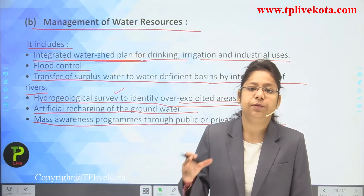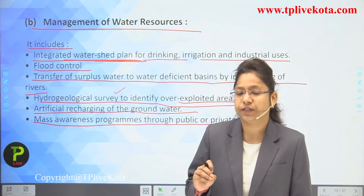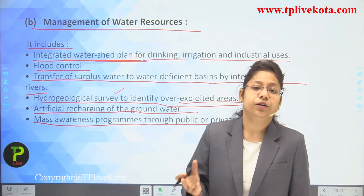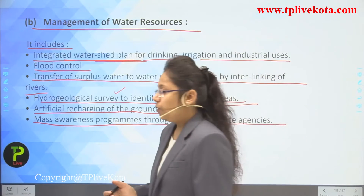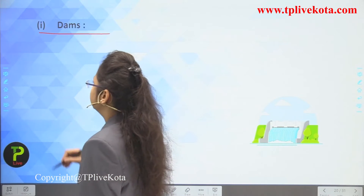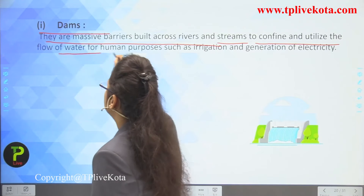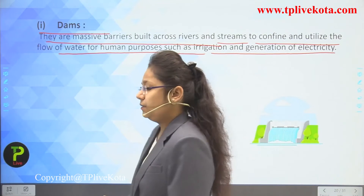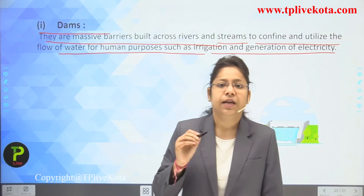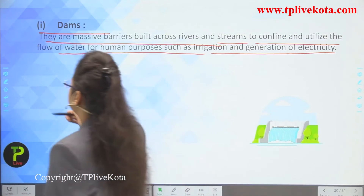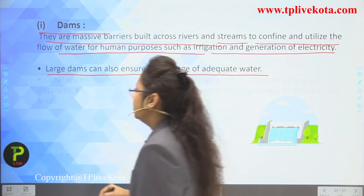Mass awareness programs through public and private agencies inform people that only three percent of fresh water remains on Earth's surface, and over-exploitation will leave no potable water to drink. Dams are massive barriers built across rivers and streams to confine water for human purposes such as irrigation and electricity generation. Excess water from rivers is stored in dams and used in hydroelectric power generation. Large dams ensure storage of adequate water for future use.